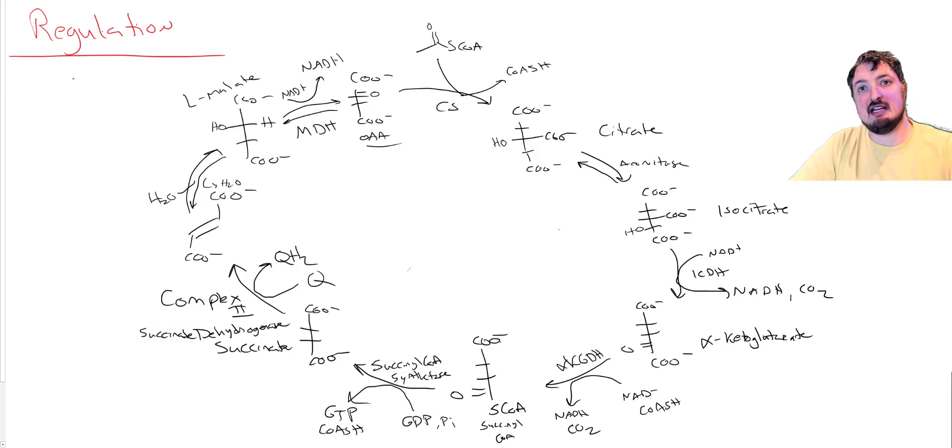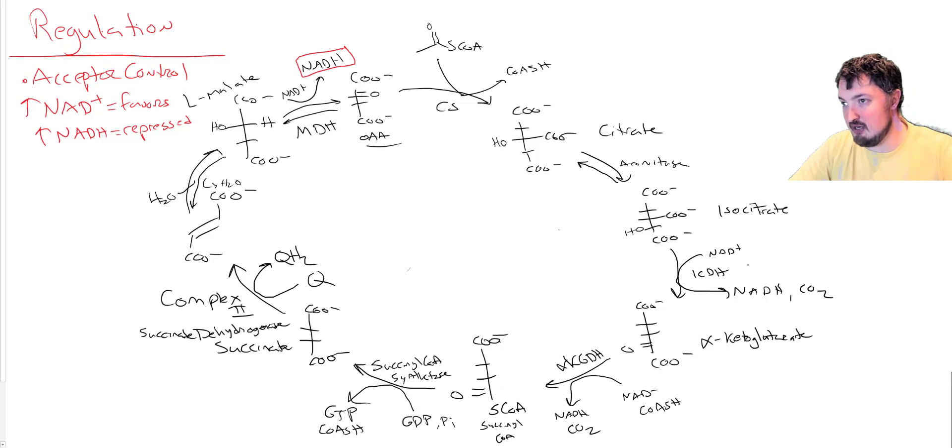The key idea here is we have acceptor control, which means if we have lots of NAD, it favors the cycle. And if we have lots of NADH, we repress the cycle. We have three steps that make NADH here. We have the malate dehydrogenase, the isocitrate dehydrogenase step, and the alpha-ketoglutarate dehydrogenase step. So all three of those are going to be making NADHs. If you have a lot of NADHs, you end up with repression. The way that works is lots of NADHs are going to work on the rate-determining step.